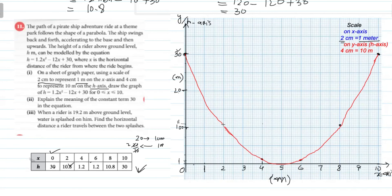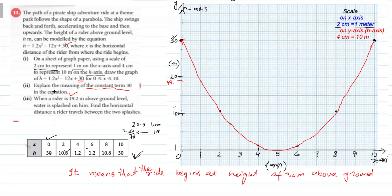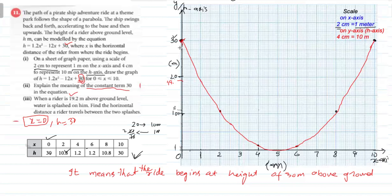Points join کرنے سے graph آ گیا ہے۔ Next part second: explain the meaning of the constant term 30 in the equation۔ Equation h = 1.2x² − 12x + 30 میں اگر x = 0 ہو تو h = 30 آتا ہے۔ x horizontal distance کو show کرتا ہے جو ride start کرتے وقت zero ہوتا ہے۔ اس کا مطلب: it means that the ride begins at a height of 30 meters above ground level۔